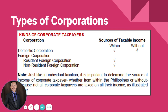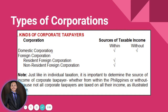When we talk about corporation in terms of taxation, corporations are divided into different kinds. We have two major types: domestic corporation and foreign corporation. Domestic corporations are those incorporated under Philippine laws. If it is not incorporated under Philippine laws, then it is considered a foreign corporation. Examples of domestic corporations are Jollibee, San Miguel Corporation, and ABS-CBN, while foreign corporations include McDonald's and others.